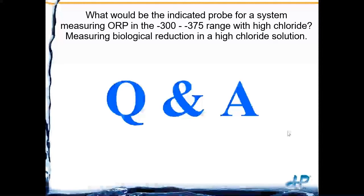Question: what probe is indicated for measuring ORP in the negative 300 to negative 375 millivolt range with high chlorides, measuring biological reduction? You'll need at least a double junction reference if using a traditional reference. It would also be worth considering whether pH compensated ORP is needed. If you simply have a high chloride solution, a double junction reference electrode with traditional KCl would be okay.